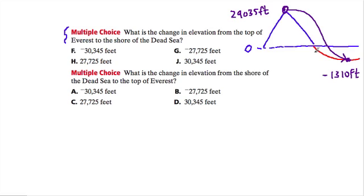So they want to know, what's this distance? Well, first of all, it's got to be a negative change because we're starting at a high mountain and going down to the shore. So J and F are out.